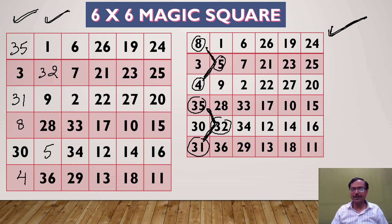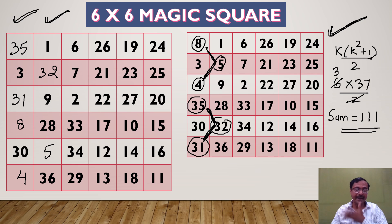What will be the sum of all the numbers? You know the formula - k times k square plus 1 by 2. K is 6 in this case because it's a 6 by 6 magic square, so 6 times 36 plus 1, which is 37 by 2. 2 cancels 6, giving you the sum as 37 times 3, which is 111. You can check all the row totals, column totals, and diagonal totals - they will all be 111. An amazing concept in mathematics which very few students know, and you can learn this from this video and surprise your friends.